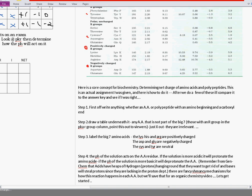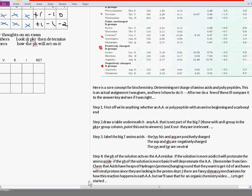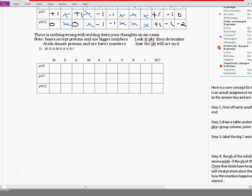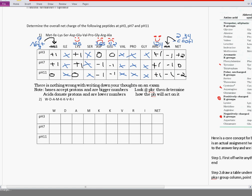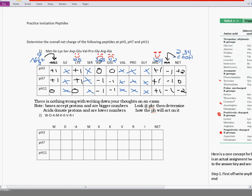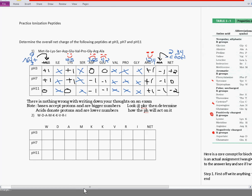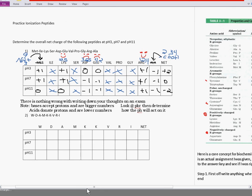Now let's get started. I'll scroll over and check out this table. Now, there's nothing wrong with writing down your thoughts in an exam or a homework assignment. Note that bases accept protons and are the bigger numbers. Acids will donate protons and are the lower numbers.